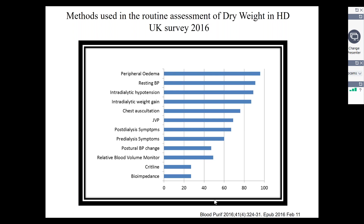In about 20 to 40 percent of cases, patients are being assessed by the use of additional devices, such as a relative blood volume monitor or bioimpedance devices. Of these, some studies show that among these clinical signs, jugular venous pressure perhaps has the highest specificity, whereas the presence of edema is most often utilized because it's an easy sign to look for — though it isn't the most specific in terms of reflecting the expansion of the extracellular water space.